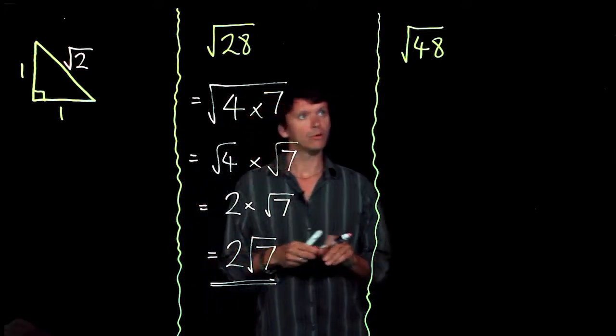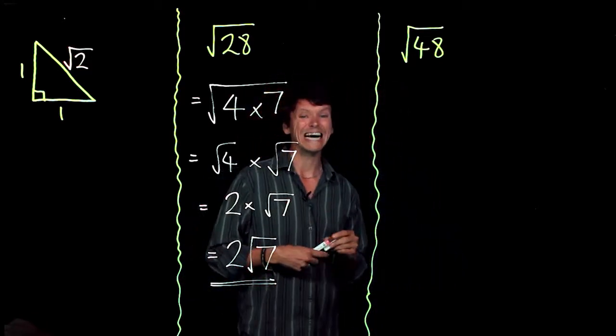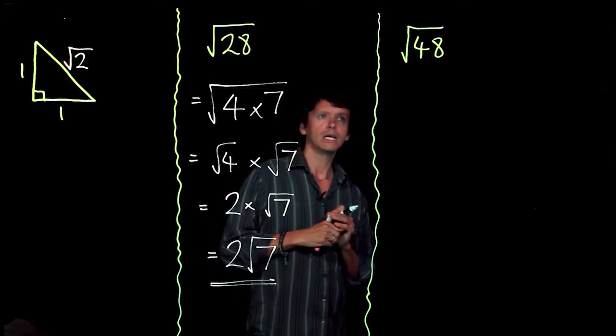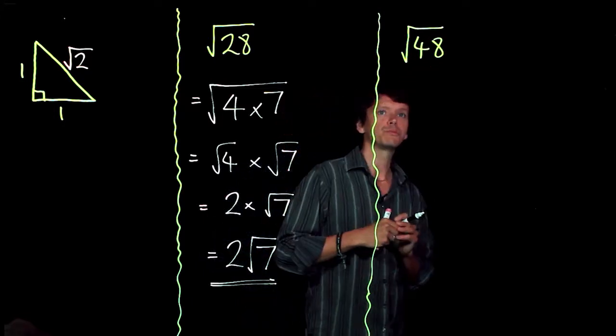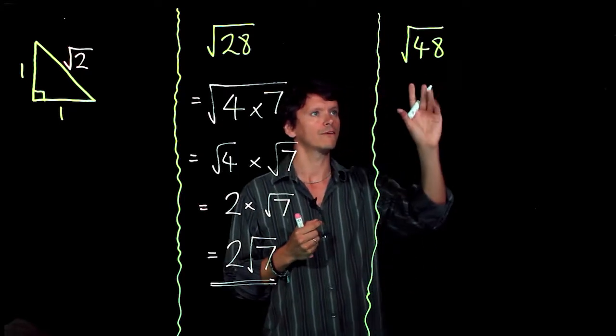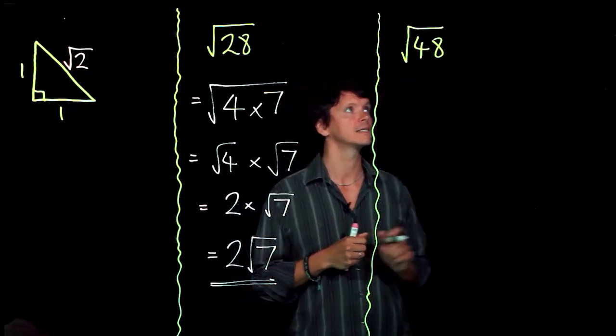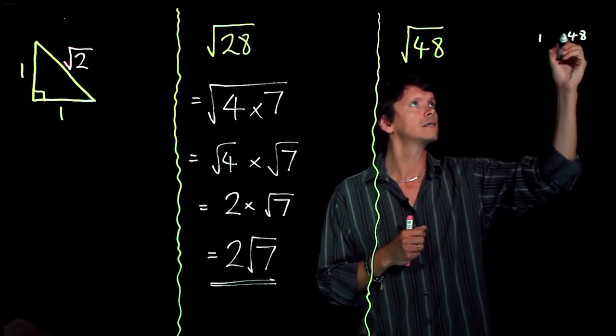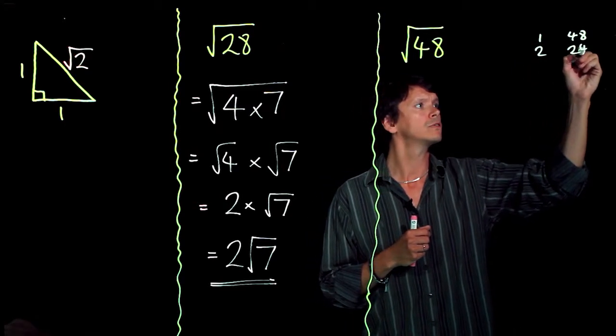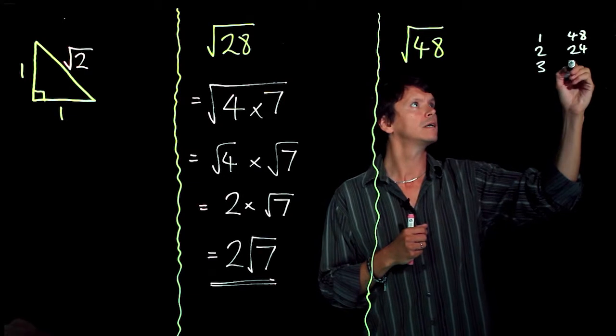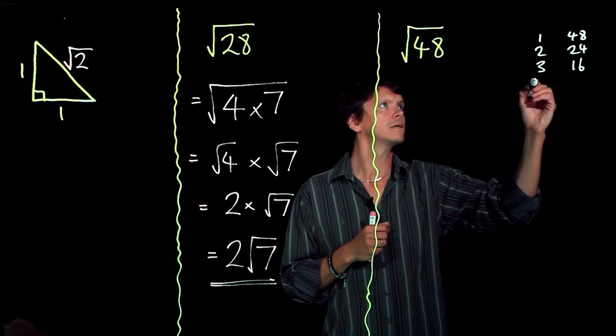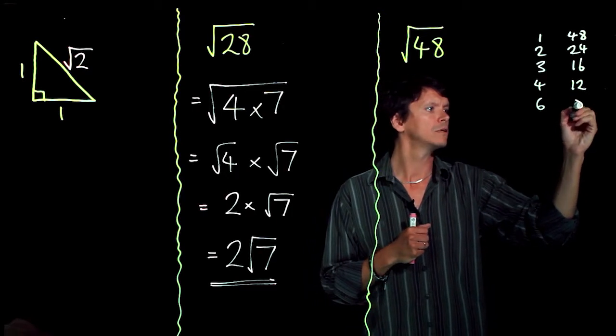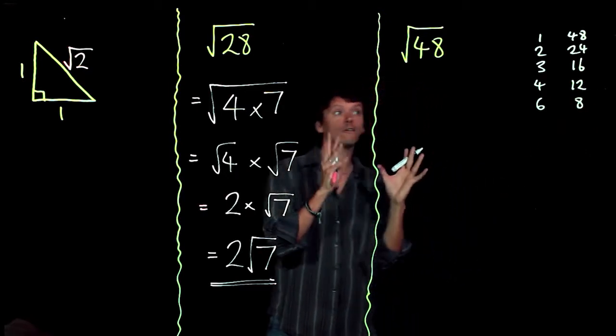Now if we have a look at this example on the other side here, the square root of 48. Sometimes you're presented with choices into what pair of factors you split a number up into. So let's have a think of the factors of 48. Well, we've got 1 and 48. We've got 2 and 24. We've got 3 and 16. We've got 4 and 12. And we've got 6 and 8. Okay, there's all our factors.